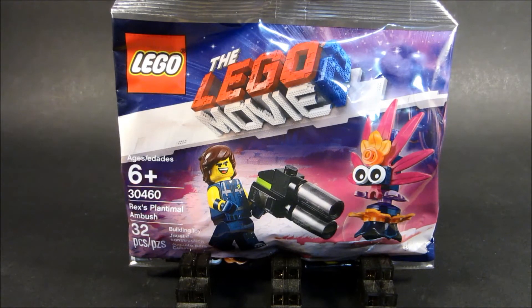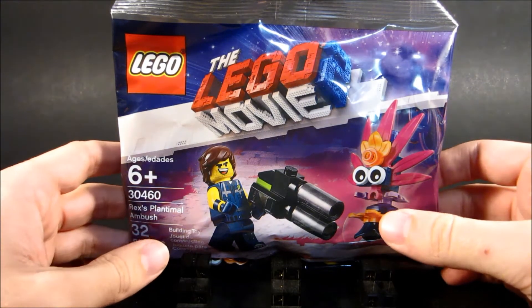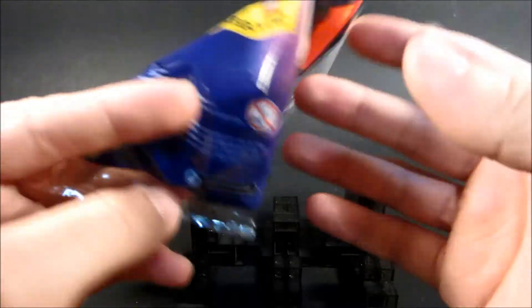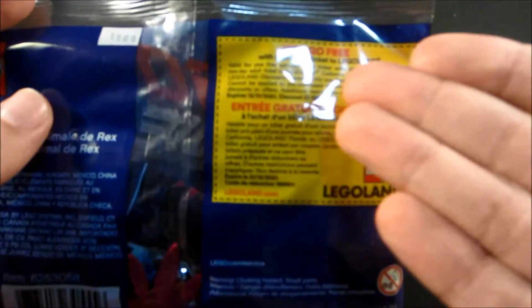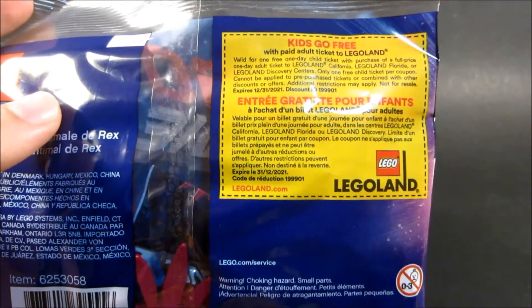Hey what's up you guys, this is MCA LEGO Boy here with 30460 Rex's Plantimal Ambush, 32 pieces, yet another LEGO Movie 2 set, this time being a polybag. I've never actually noticed this before - kids go free with a paid adult ticket to LEGOLAND. Check that out on the back of your polybags.